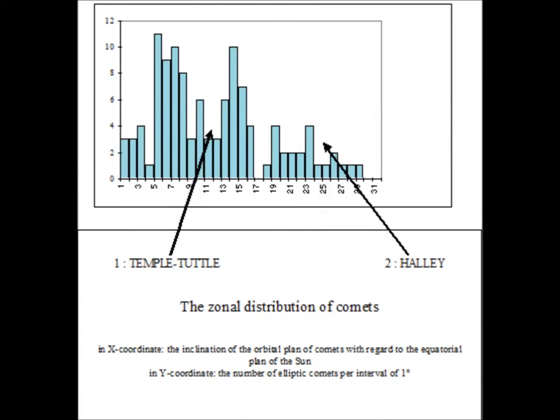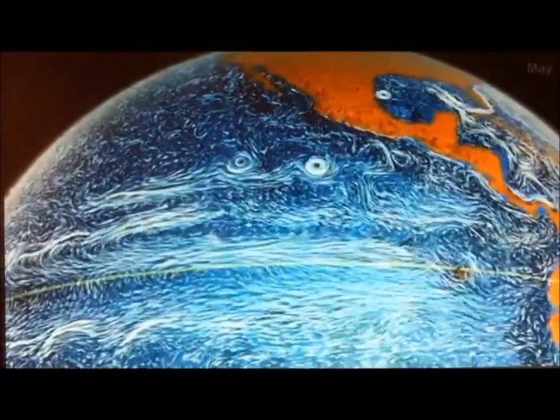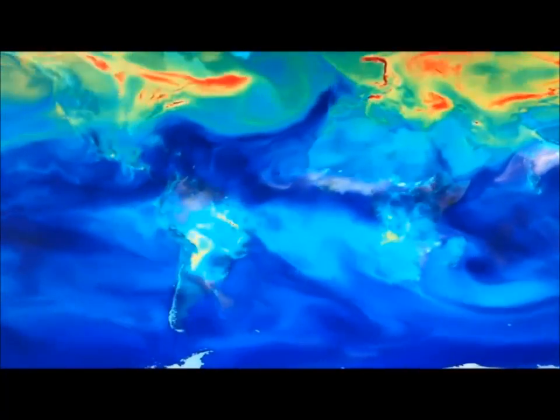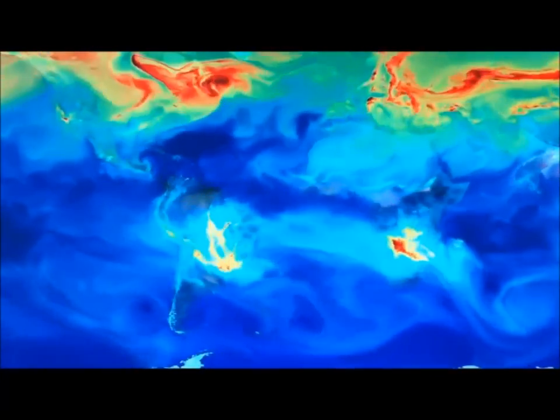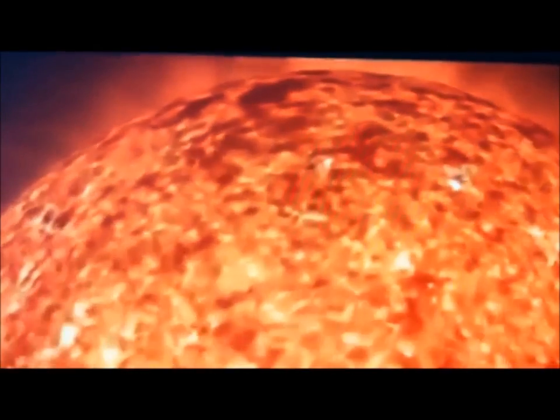Moreover, for the low inclinations trajectories of comets calculated relative to the equatorial plane of the sun have a clearly zonal distribution. This is also the case of ocean currents for the Earth. The phenomenon is also indisputable for terrestrial winds even if it is less clear. Finally, the rotation of the sun on itself is essentially zonal.